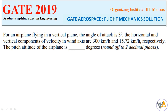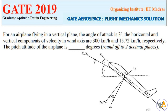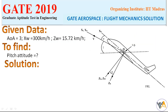Next question: for an airplane flying in a vertical plane, the angle of attack is 3 degrees. The horizontal and vertical components of the velocity in the wind axis are 300 km/h and 15.72 km/h respectively. The pitch attitude of the airplane is, in degrees, rounded off to two decimal places. Here the aircraft has an angle of attack alpha, with horizontal component xw = 300 km/h and vertical component zw = 15.72 km/h.